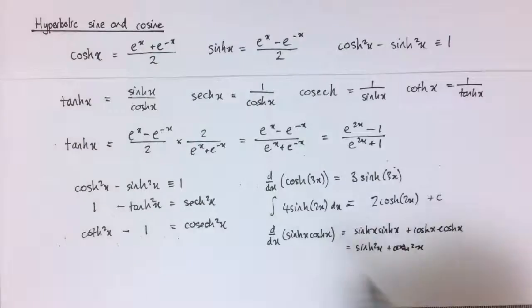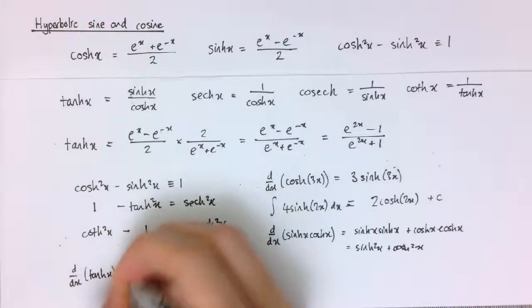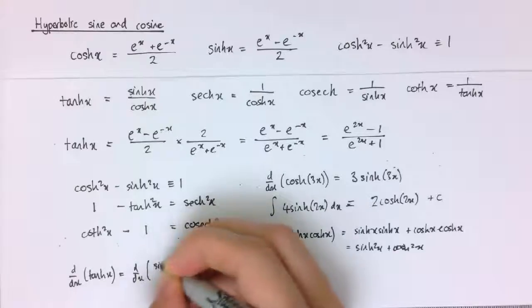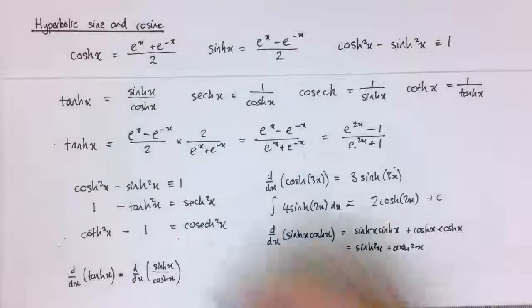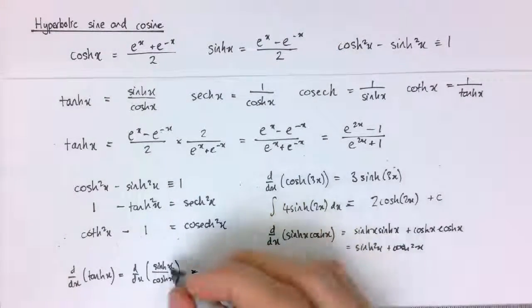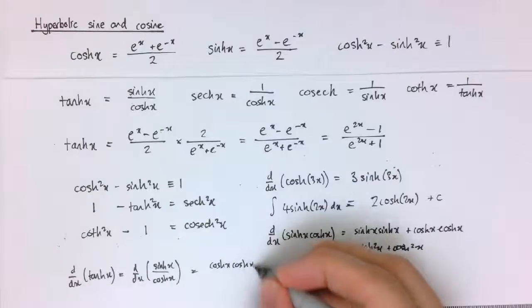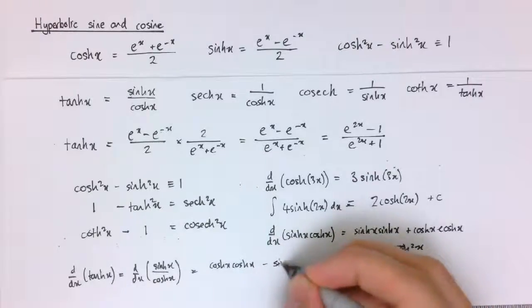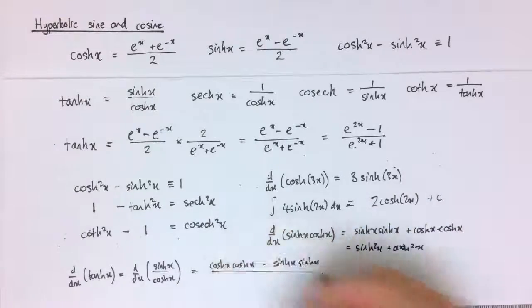And we could differentiate all sorts of things. So, for example, one really useful result is to differentiate tanh of x, which is d by dx of sinh over cosh. So, we could use the quotient rule. And so that would be the derivative of the top times the bottom there minus the top times the derivative of the bottom and all divided by cosh squared of x.